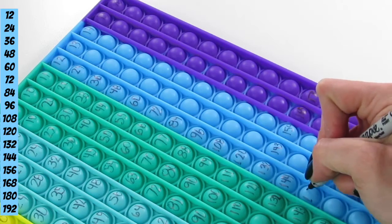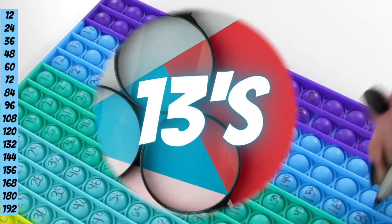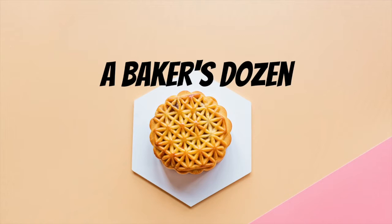Now, we are at 13. A baker's dozen. The 13s have a trick for multiplying. And for that, you will need the ones column and the threes columns.